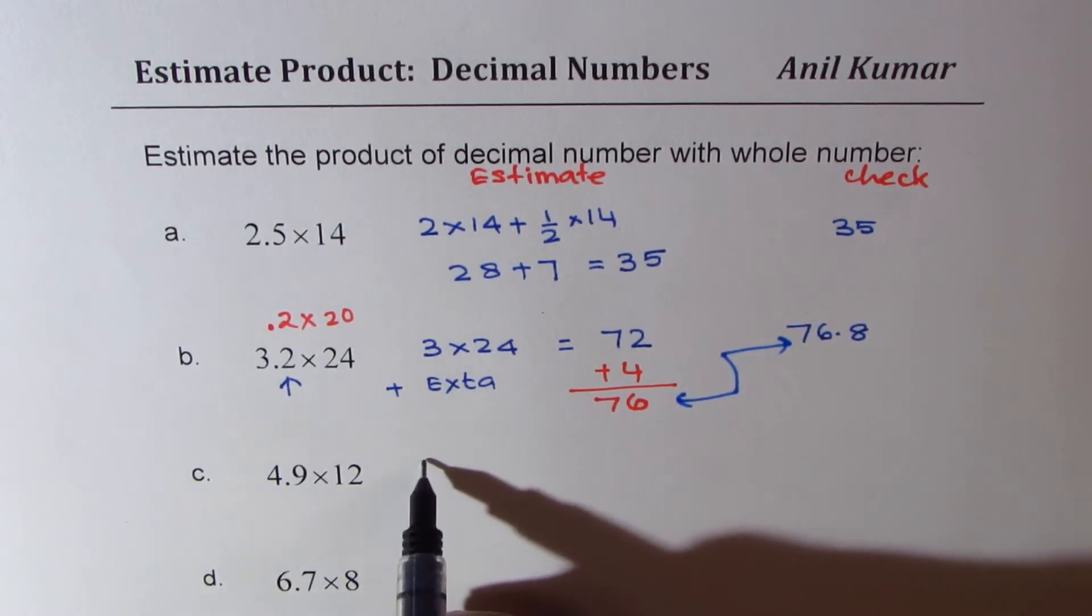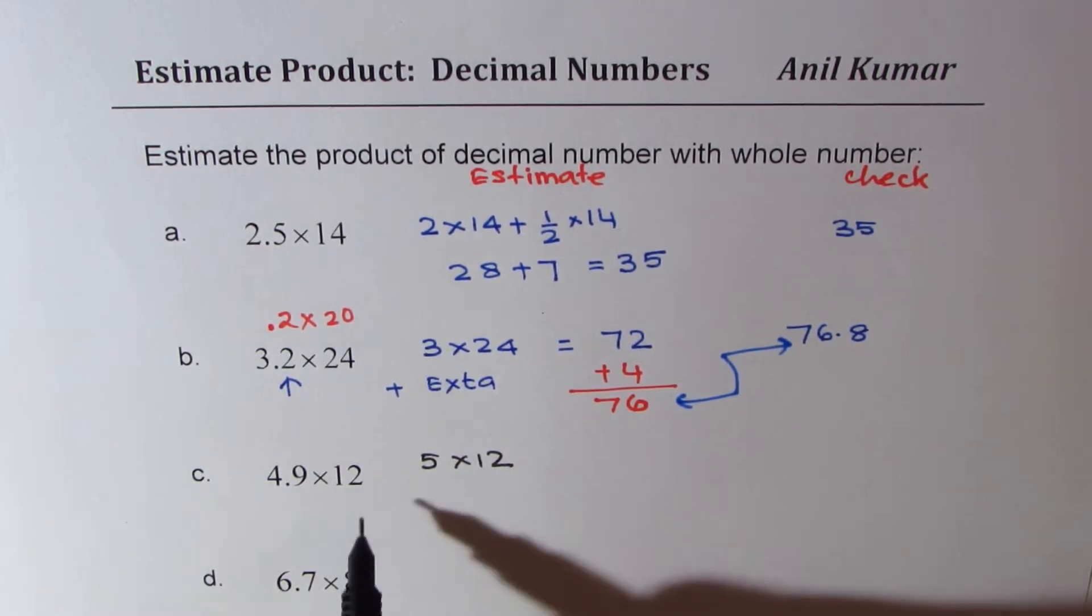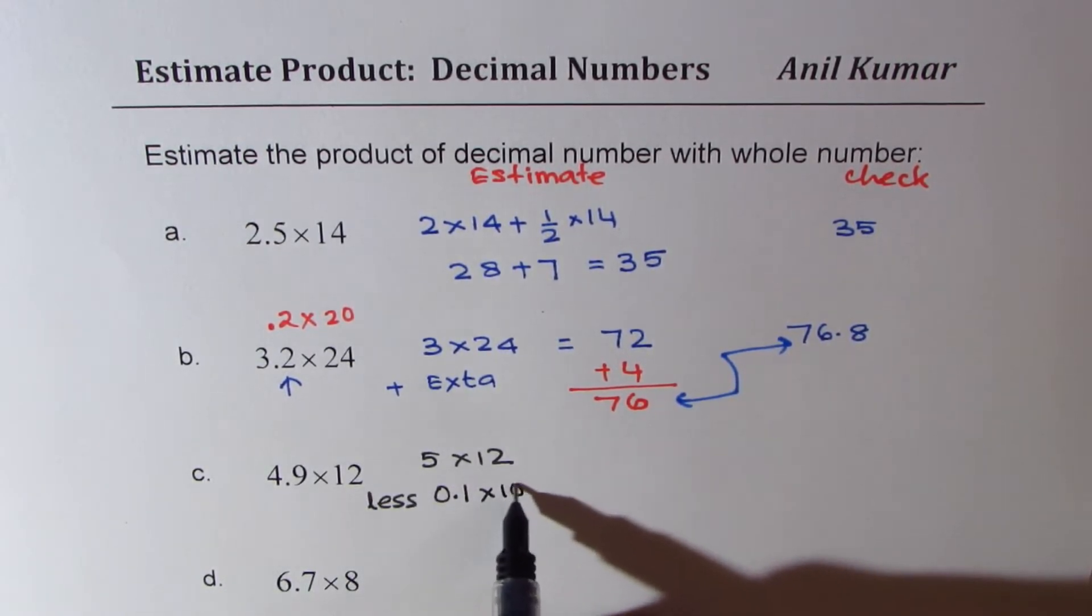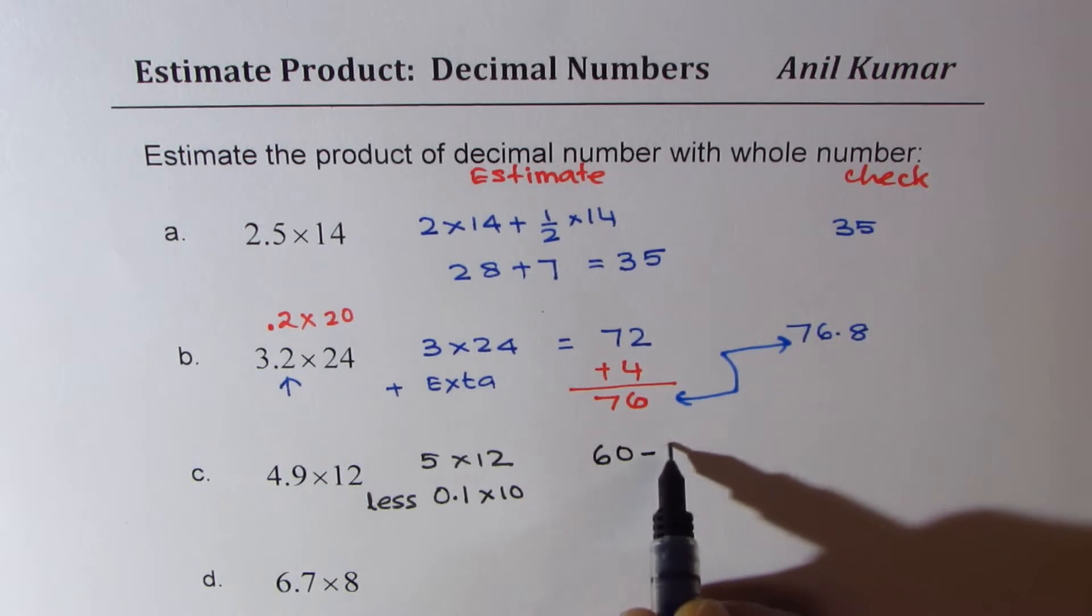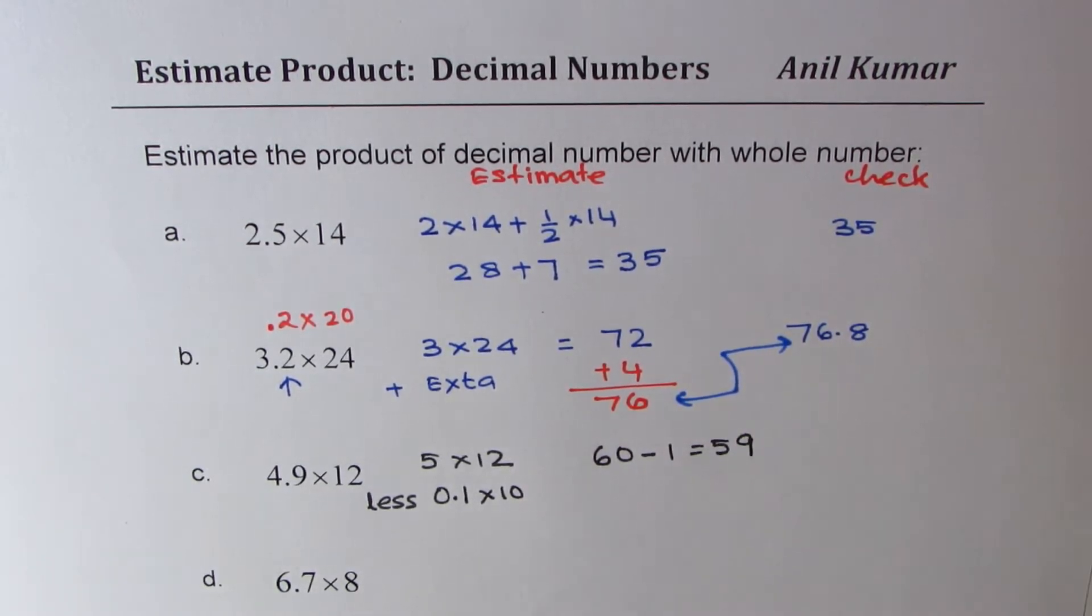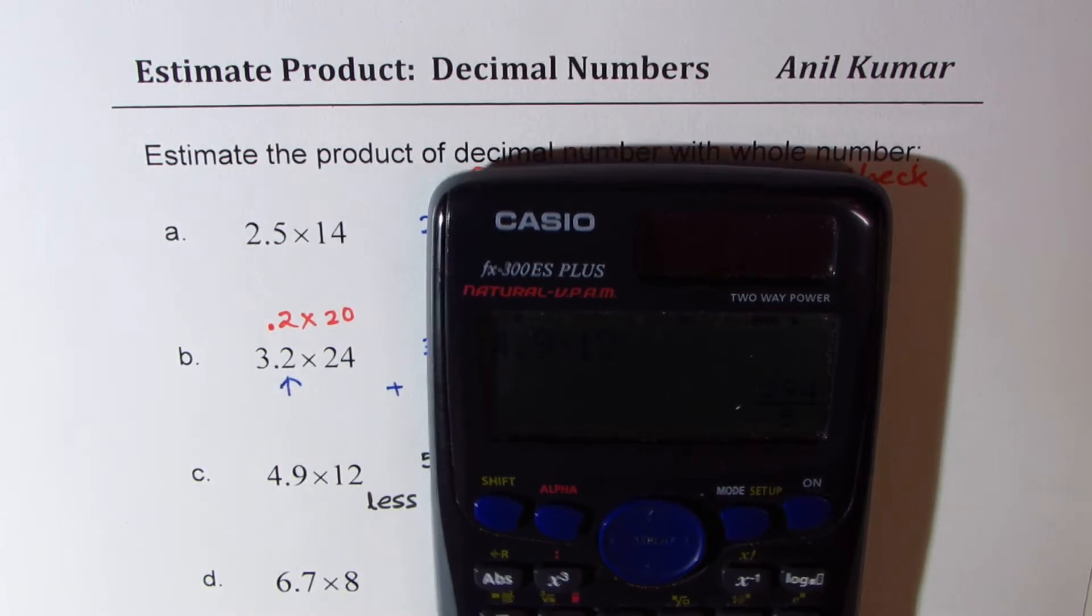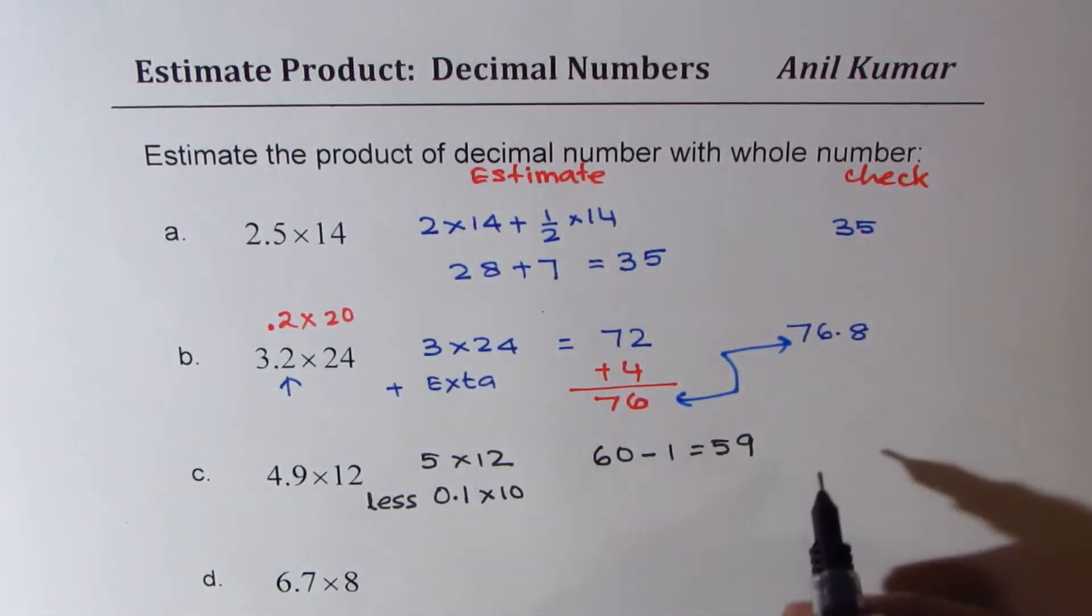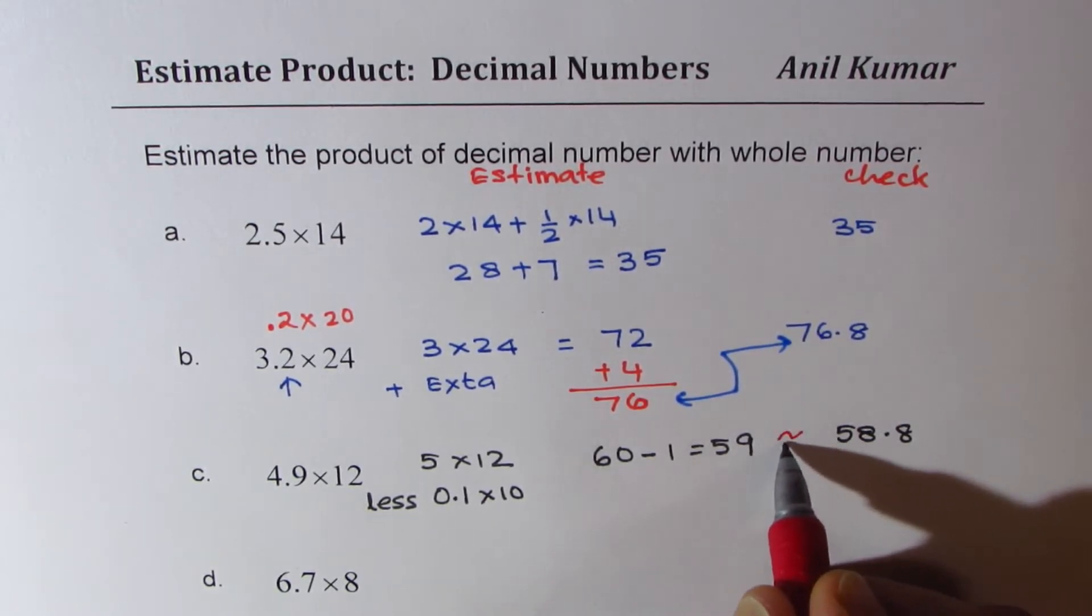Now let's do the next one. 4.9 can be rounded to 5, so we can do 5 times 12. Now this time, we have rounded higher, so we're looking for less by 0.1 times 10, which is 1. So we have to less 1. So what we get here is 60 minus 1, which is 59. So 59 is fairly good estimate. Let us check our answer. So we have 4.9 times 12 equals 58.8, which are again very close.